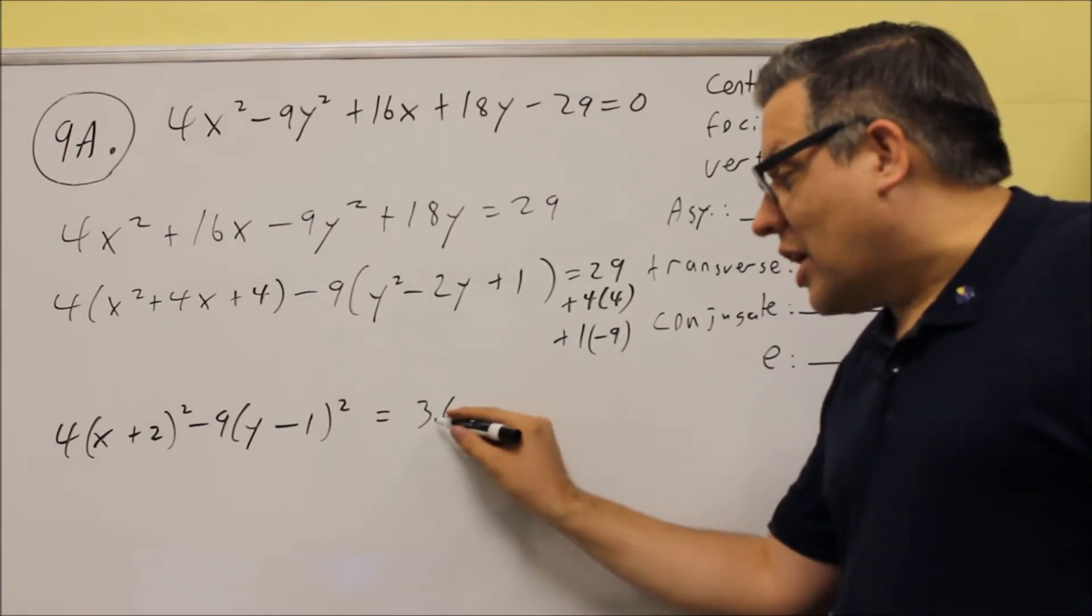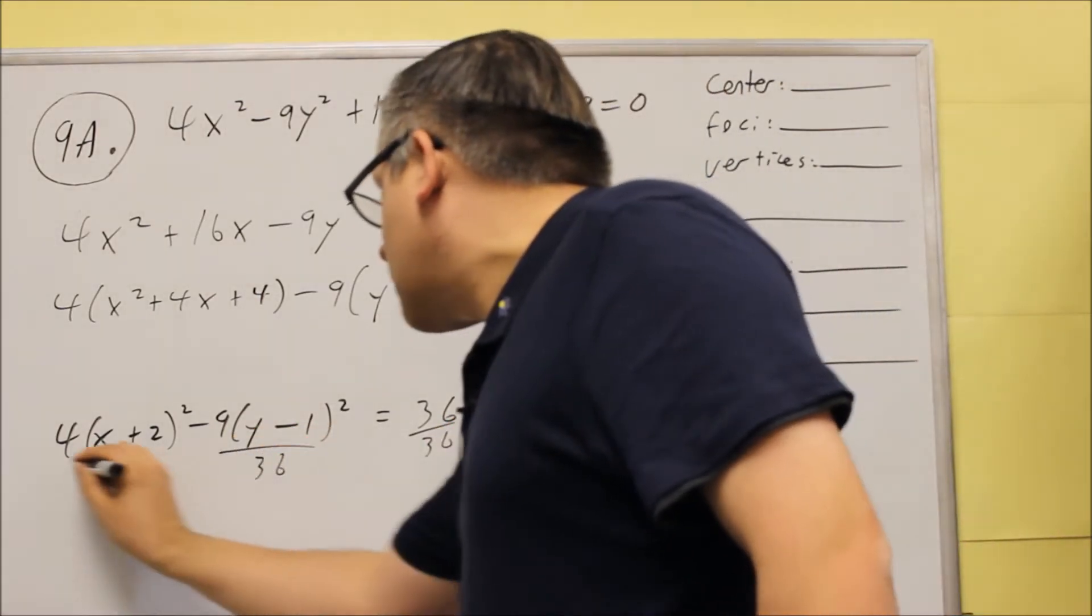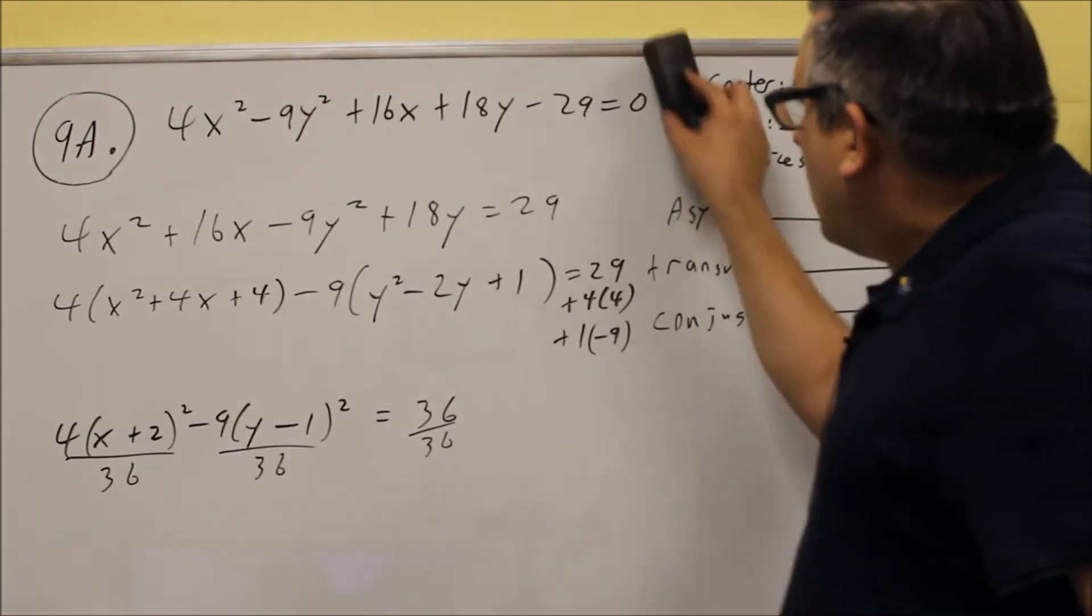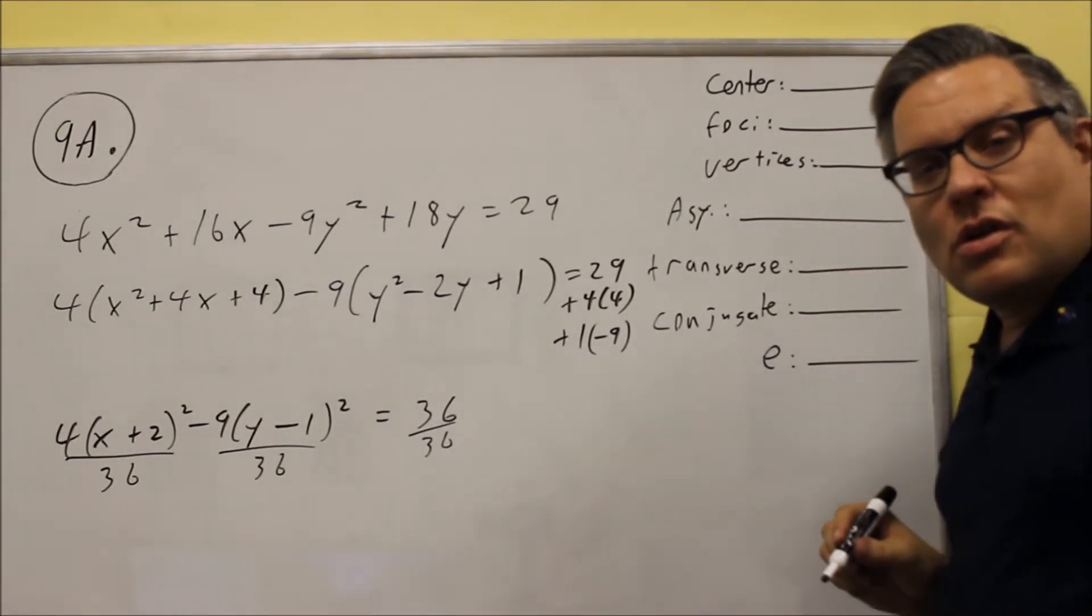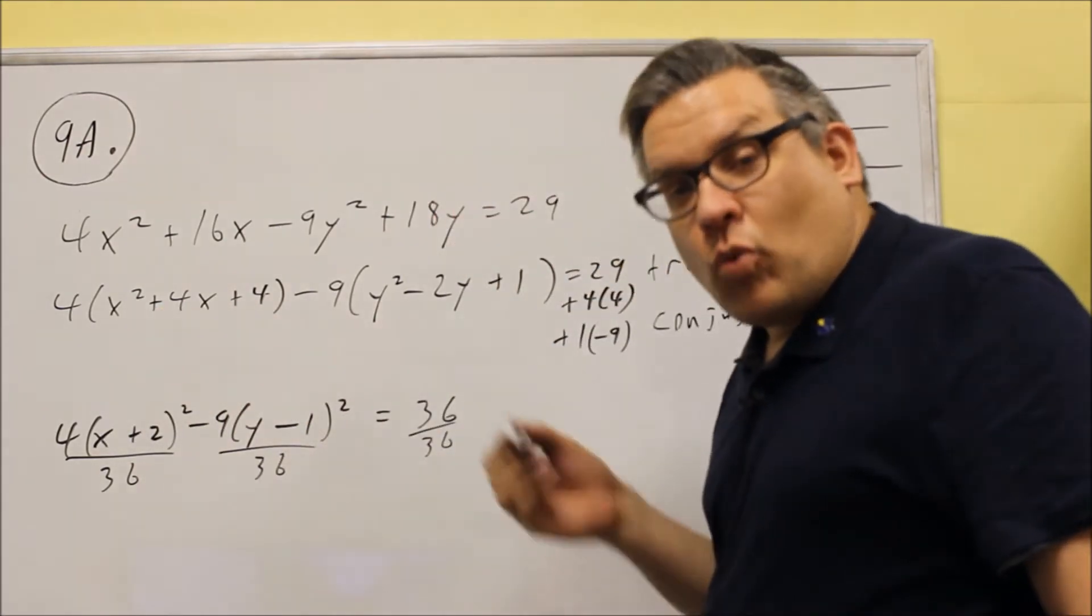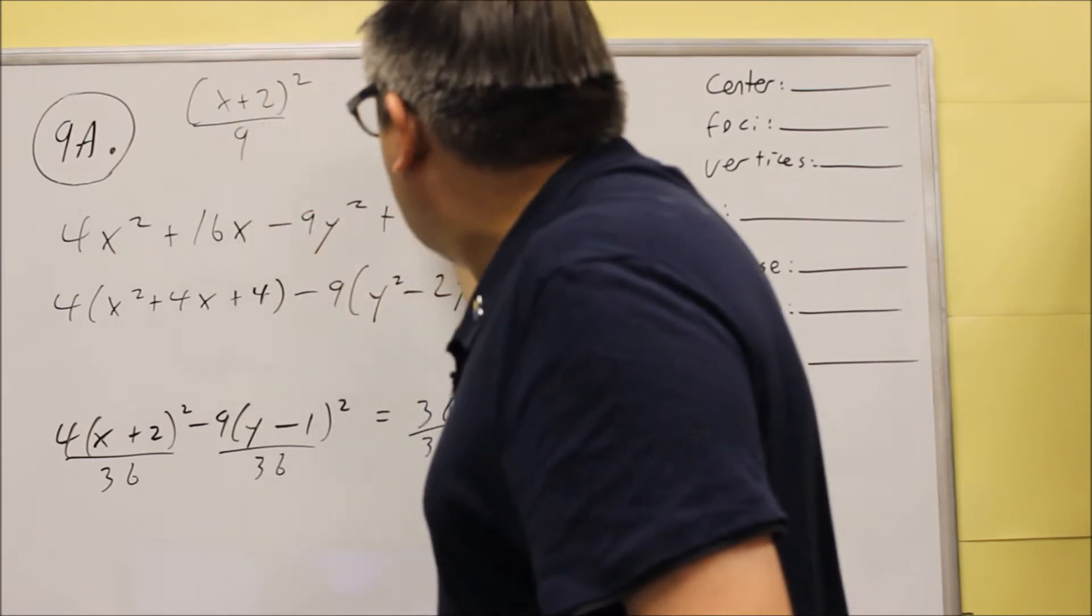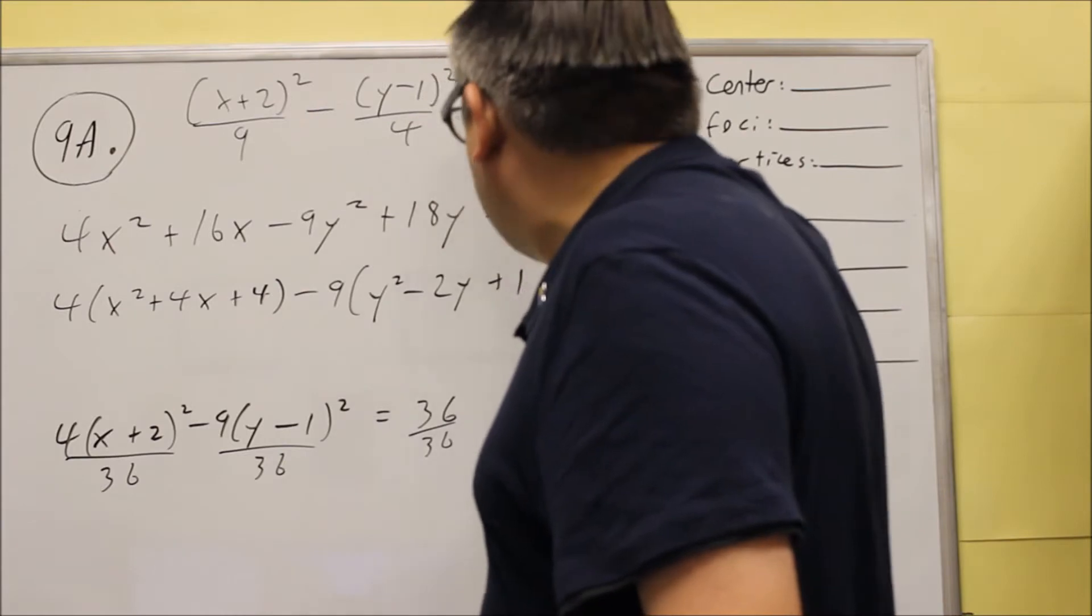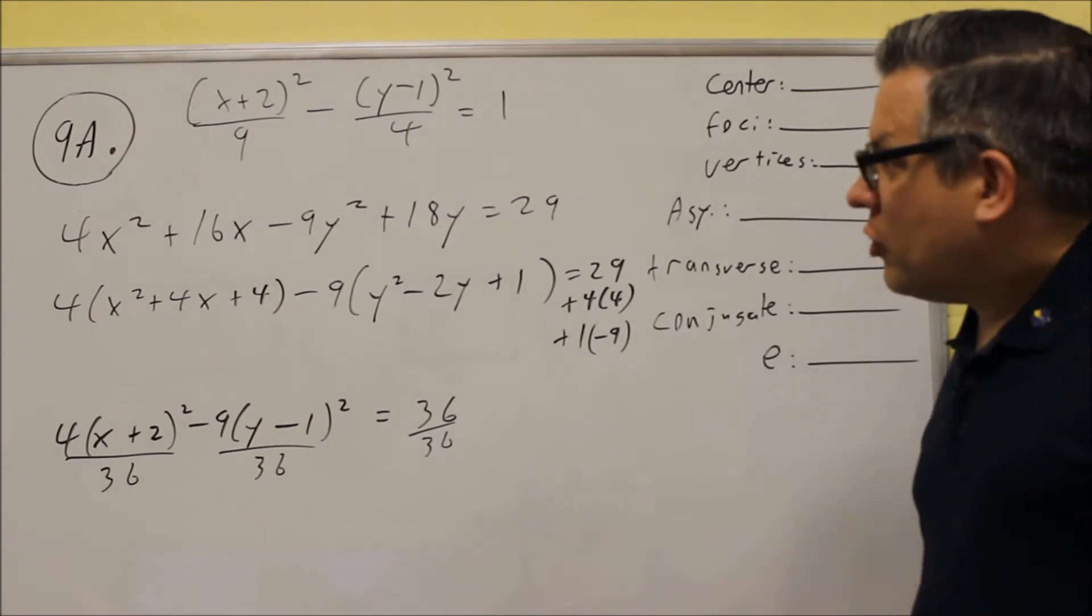We need to get this side to be a 1, so we have to divide everything by 36, and then you want to reduce the fractions. When we reduce this, 4 divided by 36, that's 1 ninth. So we're going to get (x + 2)²/9, and then we're going to do minus (y - 1)²/4. That's going to equal 1. So you have 9 and 4 down below once we reduce it.